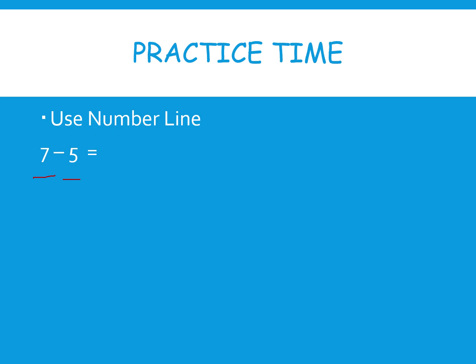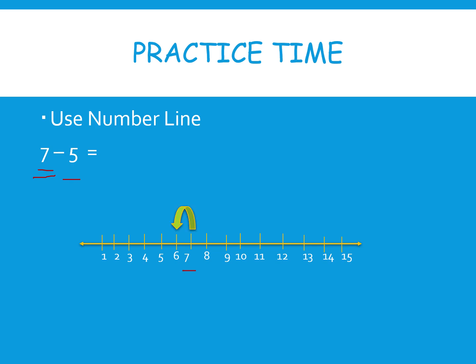Is it done, kids? I will tell you. First, draw the number line and mark the numbers. The big number is seven. Next, go backward — that means left — how many times? Five times. One, two, three, four, five — where you land is two. Seven minus five equals two.